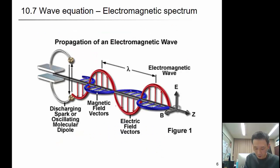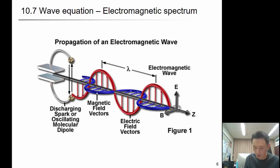Whenever there are time-varying electric field vectors, then you have magnetic field vectors, which are orthogonal to each other. And the frequency will also be the same.